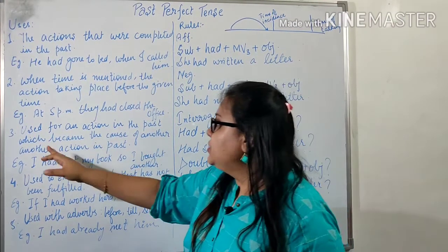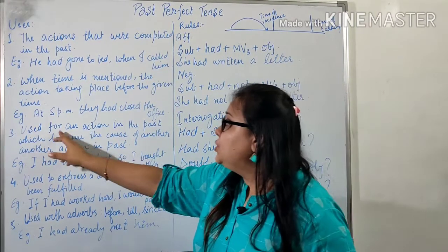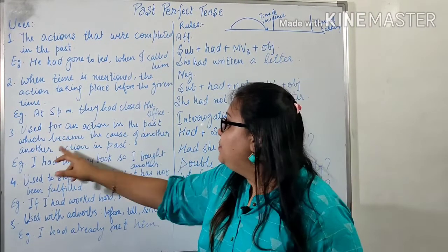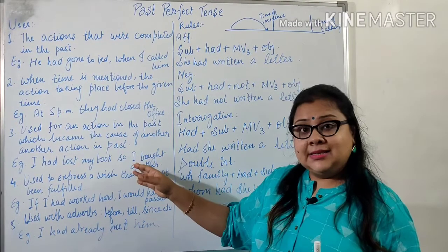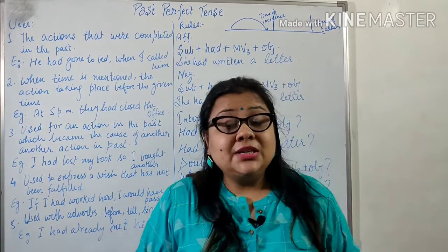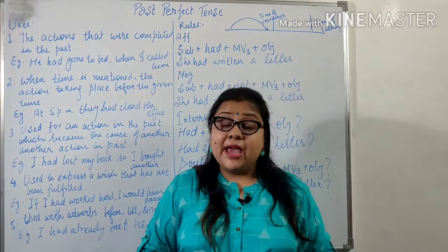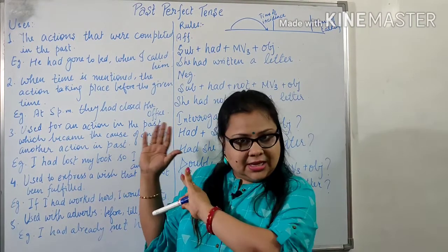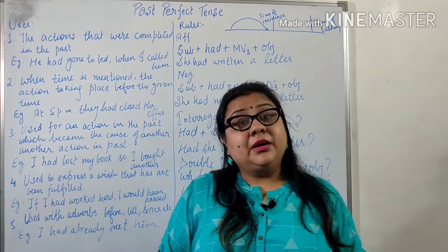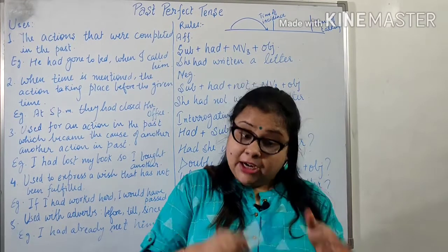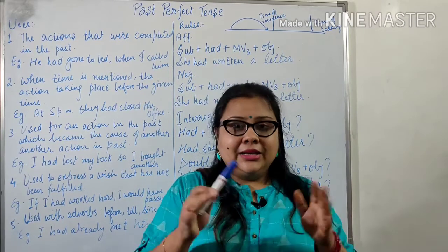Moving on to the third application: past perfect is used for an action in the past which became the cause of another action in the past. Many times students get confused about when to use 'have' or 'had' in a sentence. The rule is: the action that happened earlier takes 'had', and the action that happened after takes 'have'.